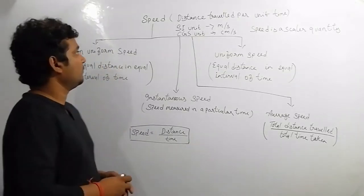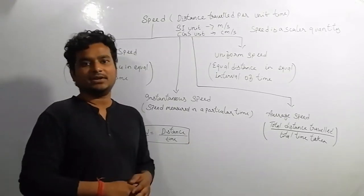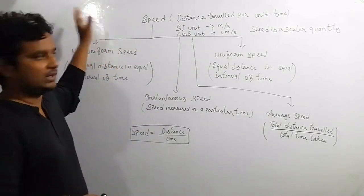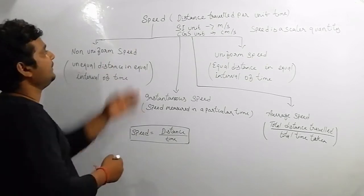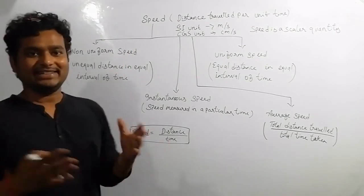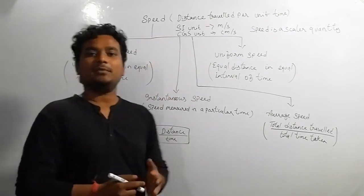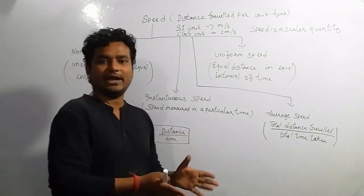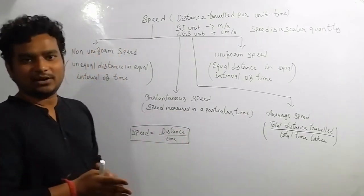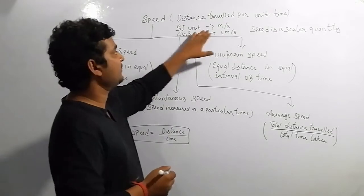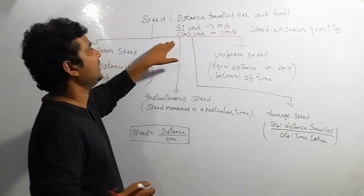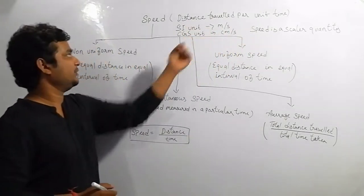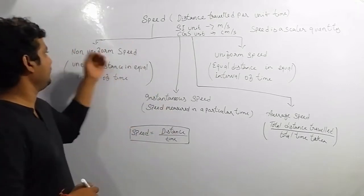Hello students, we are continuing with the chapter Motion in One Dimension, Class 9 Physics. We are now coming to speed. Speed equals distance traveled per unit time — how much distance is traveled in a particular unit of time. Speed is a scalar quantity. The SI unit of speed is meter per second, and the CGS unit is centimeter per second.